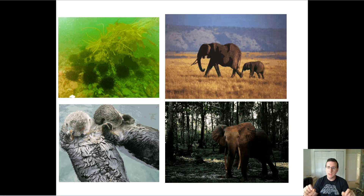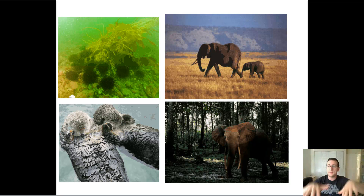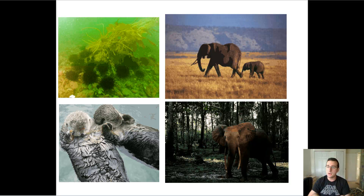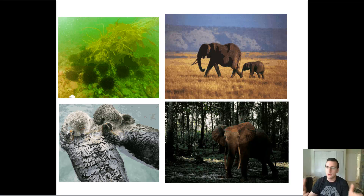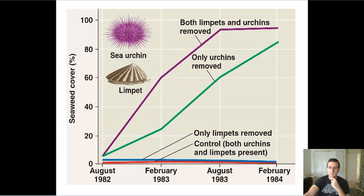Since the sea urchin's primary predator is the otter, if you were to kill off or remove the otter from the ecosystem, the sea urchins will suddenly blow out of proportion, which lowers the amount of kelp and changes the ecosystem. But if you have a lot of sea otters, the urchin numbers go down and the kelp numbers go up. What ecosystem shows up depends on the numbers of otters — they're key for that ecosystem.